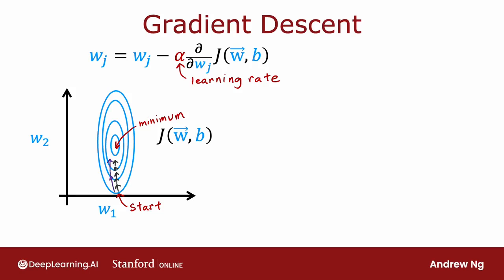There's an algorithm called the Adam algorithm that can do that. If it sees that the learning rate is too small and we are just taking tiny little steps in a similar direction over and over, we should just make the learning rate alpha bigger.